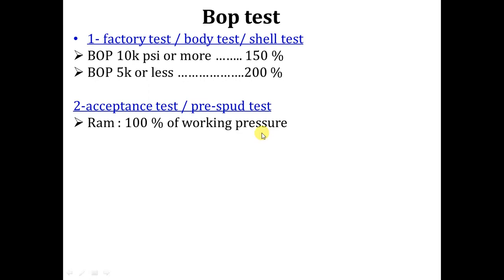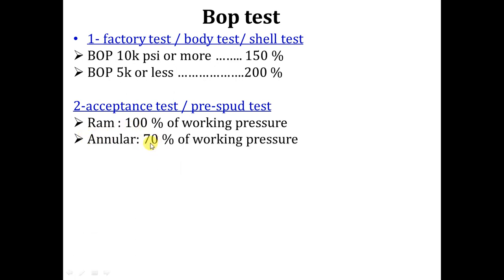If you make a rig move, you have to make a test on the test stump for the BOP. You have to test the RAM up to 100% — I don't care what your team leader, supervisor, or drilling manager tells you. As per API, you have to test the RAM up to 100% of the working pressure. For the annular, it must be 70% of the working pressure.